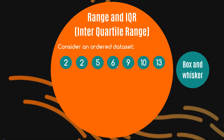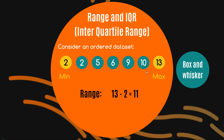So let's consider this ordered data set which has seven elements. The range is a measure of the spread of the data set and it's simply the maximum value minus the minimum value, so 13 minus 2 is going to give us a range of 11. Pretty straightforward, right?